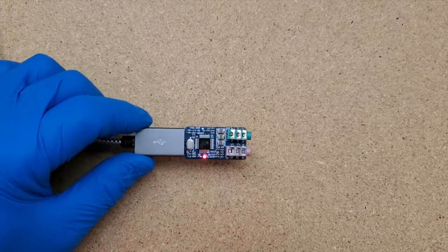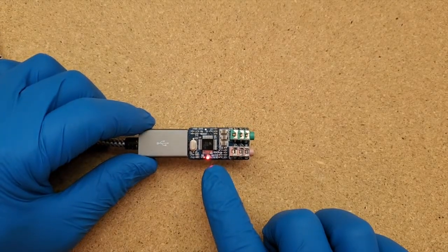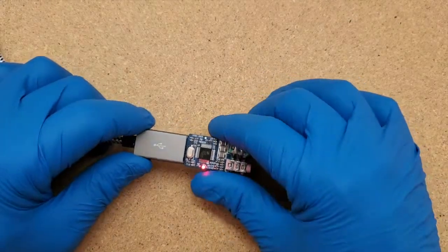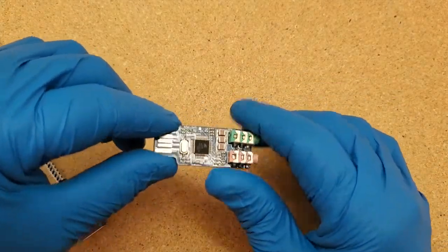Alright, FuzzPiGuy here. I'm going to show you how to remove the bias T on this CM-108 USB sound card.